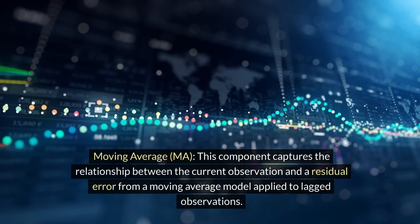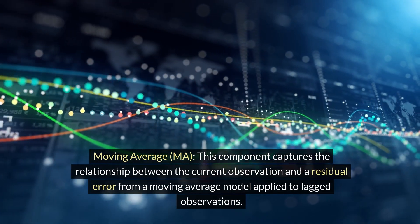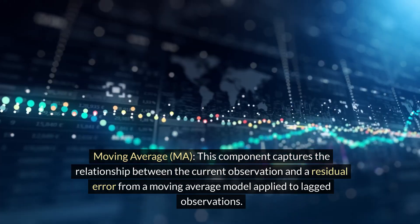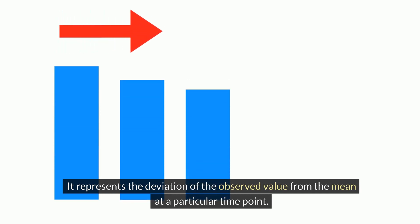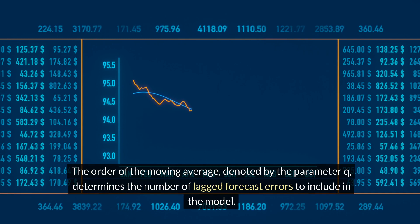Moving Average (MA): This component captures the relationship between the current observation and a residual error from a moving average model applied to lagged observations. It represents the deviation of the observed value from the mean at a particular time point. The order of the moving average, denoted by the parameter Q, determines the number of lagged forecast errors to include in the model.